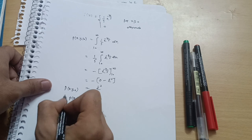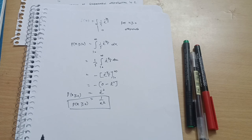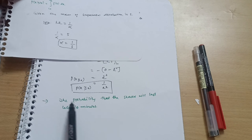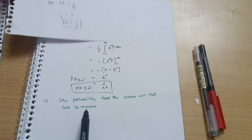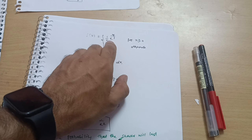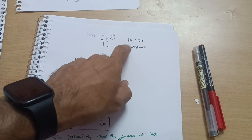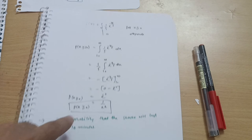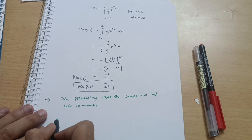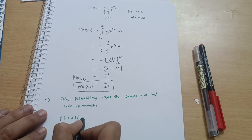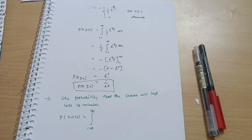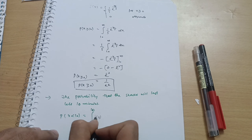Now for Part 2, we calculate the probability that the shower lasts less than ten minutes: P(X < 10) = integral from −∞ to 10 of f(x) dx. Since the function is 0 for negative values and the valid function applies for x ≥ 0, we split the integral into: integral from −∞ to 0 of f(x) dx, plus integral from 0 to 10 of f(x) dx.